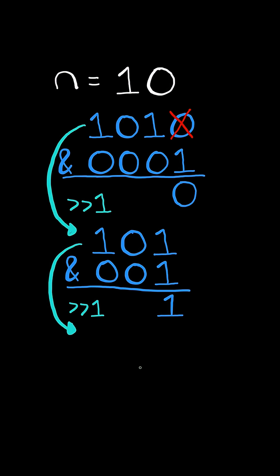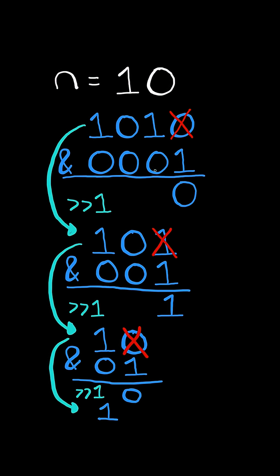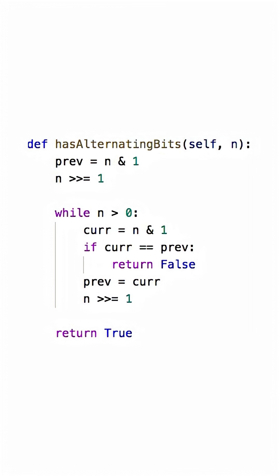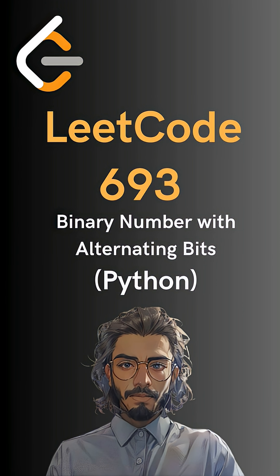We shift the number to the right by 1, which removes the last digit. Again, we bitwise AND the number by 1, which gives us the last bit. It's different from the previous bit, so we continue shifting right by 1 to remove the last bit. Here's the code to do so. Please like and follow for more.